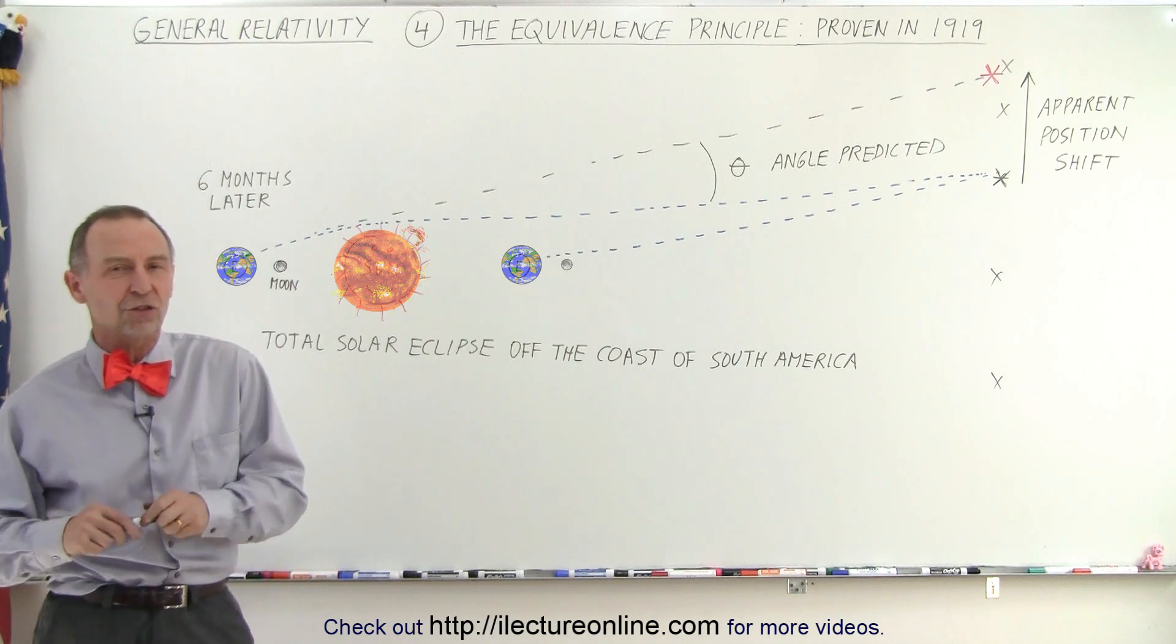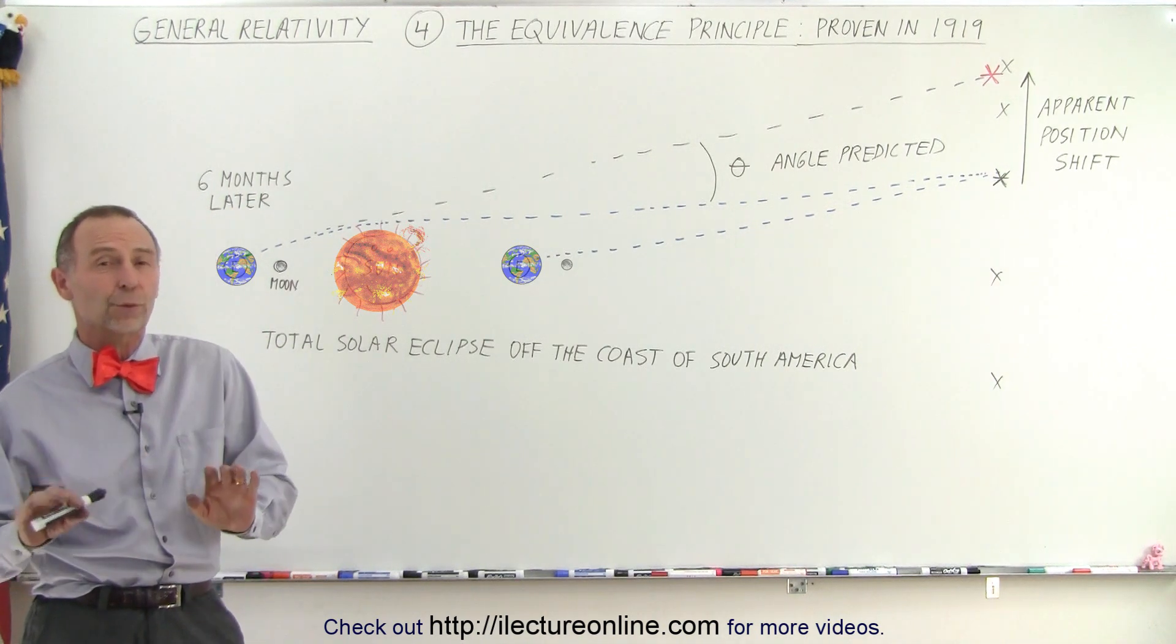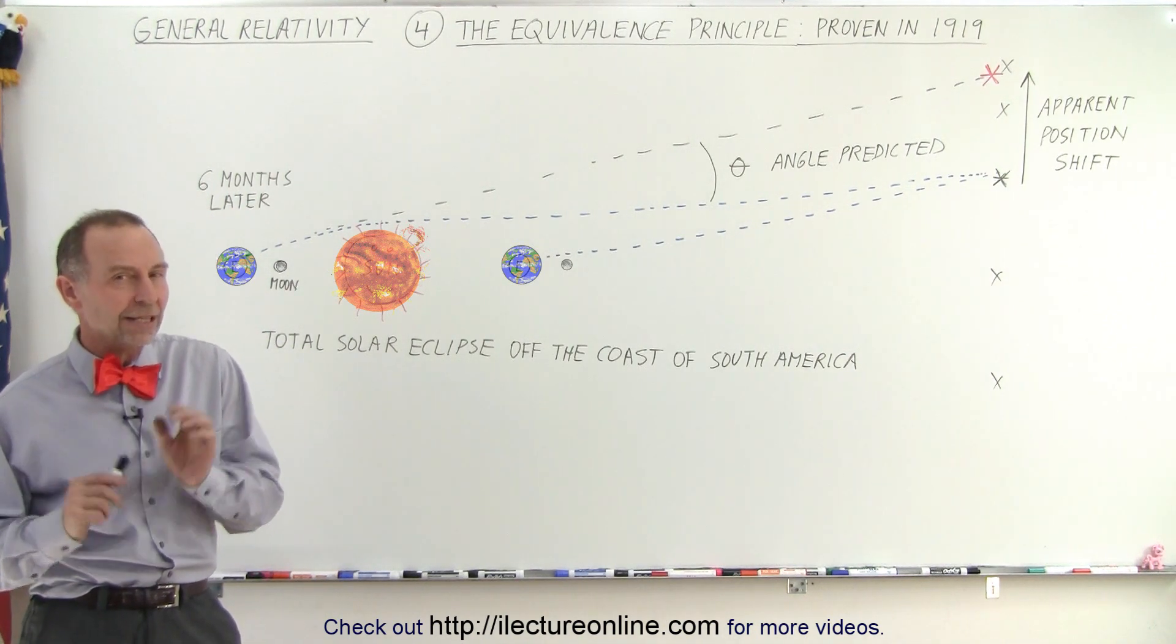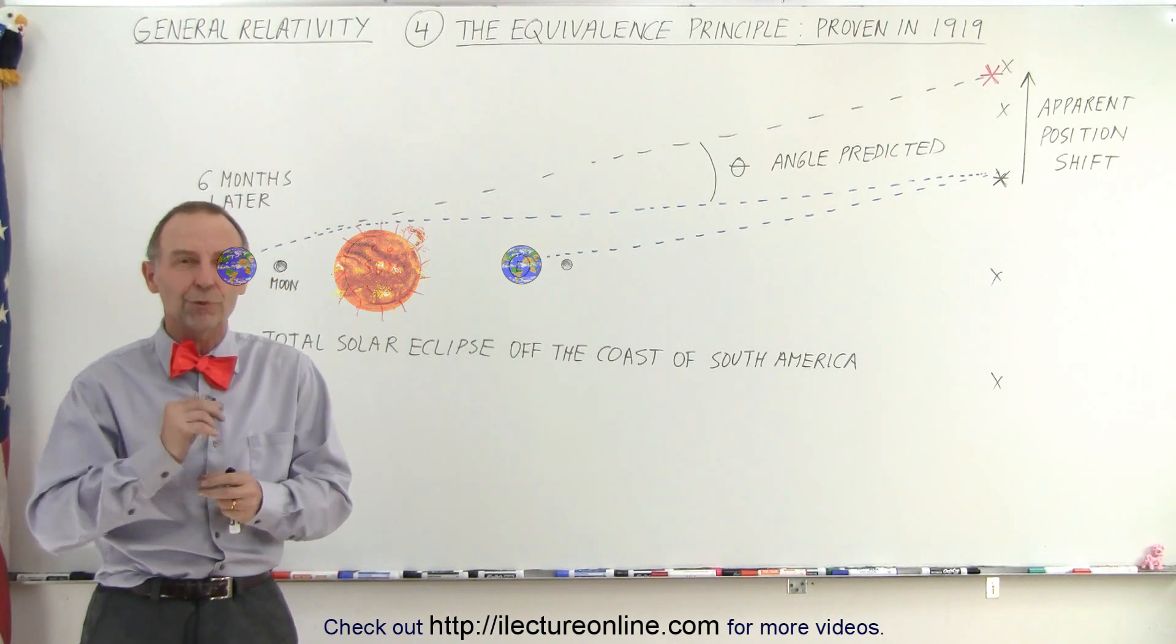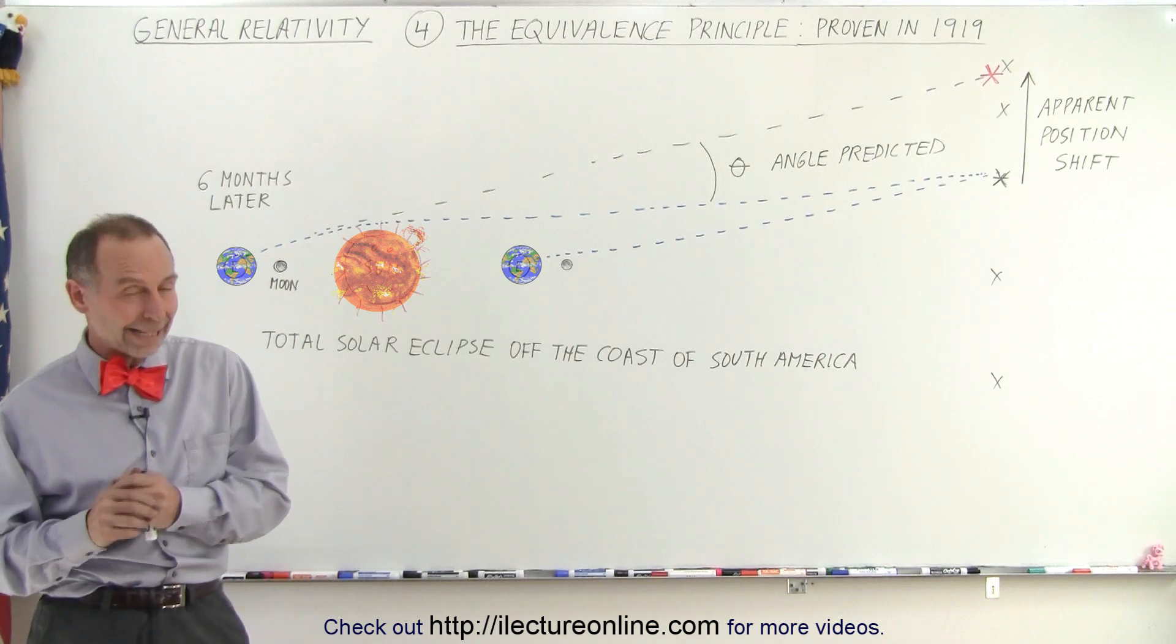Maybe a few people did, but by and large the general scientific community around the world did not believe Einstein and did not believe that light was actually affected by gravity. But then he told them, I can prove it to you, and he did in 1919.